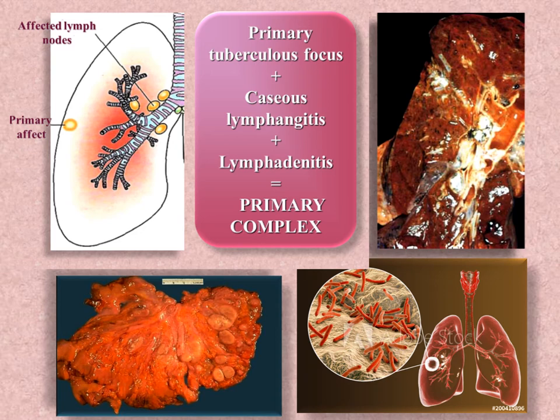Lymphangitis: tubercles form long lymphatic tracts extending from the affect to the local hilar lymph nodes — caseous lymphangitis appears. Lymphadenitis: rapidly the process spreads to local hilar tracheobranchial lymph nodes. This process is called bronchoadenitis, then spreads to bifurcational and mediastinal lymph nodes.